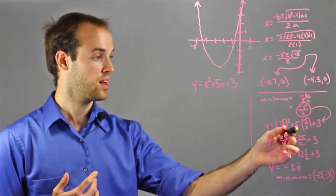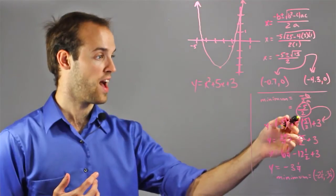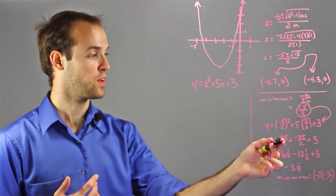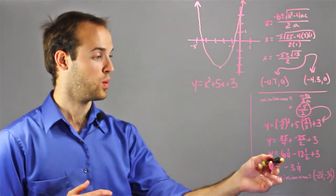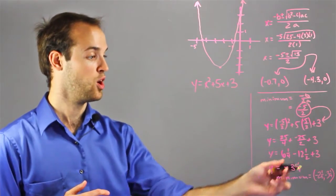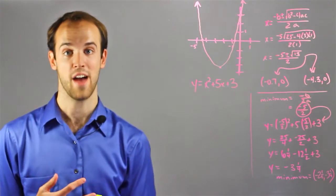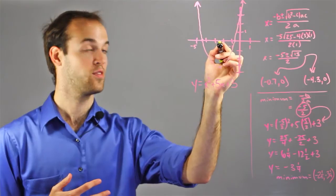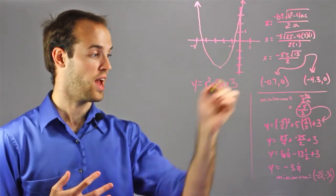So when I do that, I get negative 5 over 2 squared plus 5 times negative 5 over 2 plus 3. And then I get 25 over 4 plus negative 25 over 2 plus 3, which simplifies to 6 and a quarter minus 12 and a half plus 3, which all boils down to negative 3 and a quarter. So that's the y-value of my minimum. It's going to be negative 2 and a half or negative 5 over 2, and then the y-value will be negative 3 and 1 fourth.